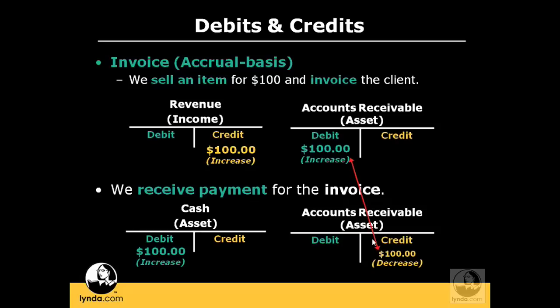At the time of the sale, we increased revenue and we increased the money owed to us through accounts receivable. When it was paid to us, we increased our cash and then we lowered accounts receivable because the money was no longer owed to us. This may be a confusing concept, but remember this movie as we begin working with QuickBooks. When we get to chapter 9 on invoicing customers and chapter 10 on client payments, reference back to this movie — it will make a lot more sense once you see it in action. QuickBooks will take care of the double entry accounting behind the scenes for you. The two most important concepts to remember are: two entries for every transaction, and those entries must equal one another to keep your accounts in balance.